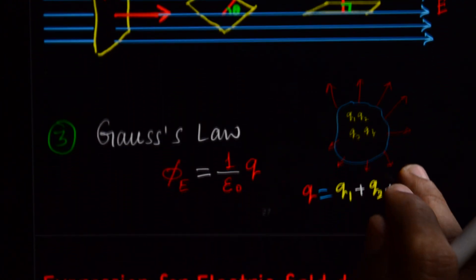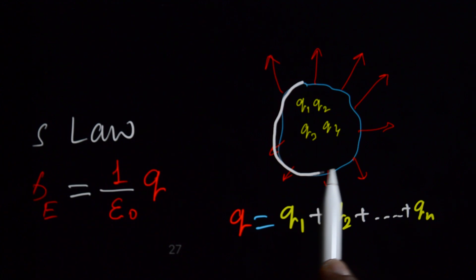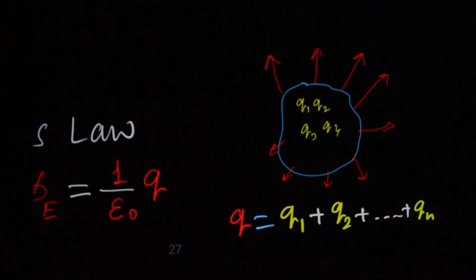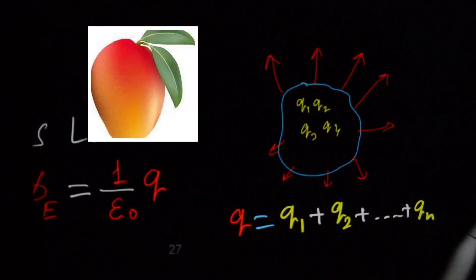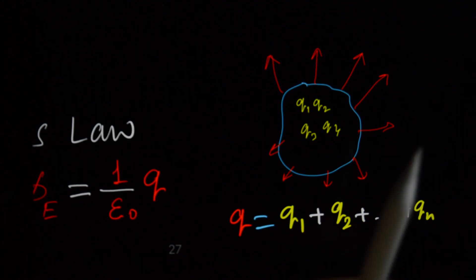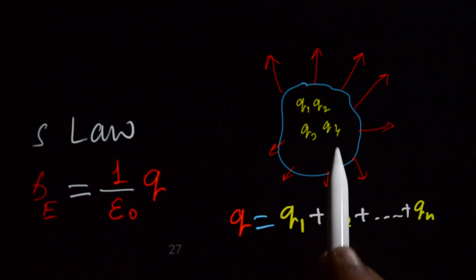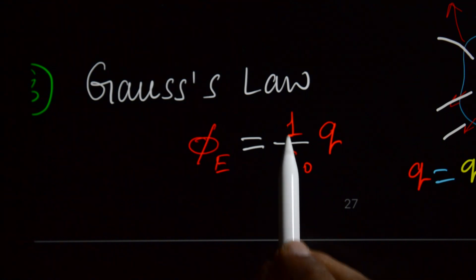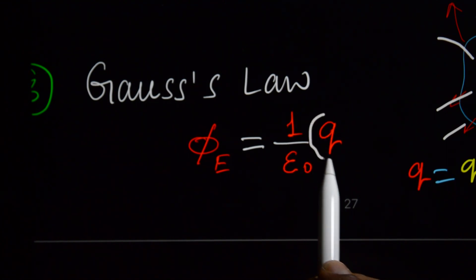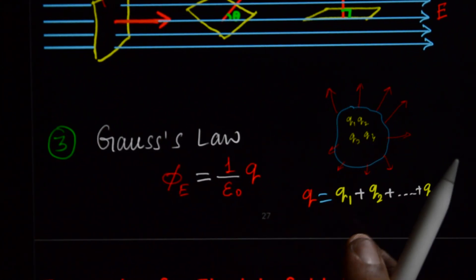This is the definition of electric flux. Now for Gauss's Law: suppose this is any closed surface — imagine a potato or a mango. Cut it and that is the closed surface. If it contains charges Q1, Q2, Q3, the total electric flux through this closed surface is given by 1/ε₀ times the total charge enclosed by that surface.